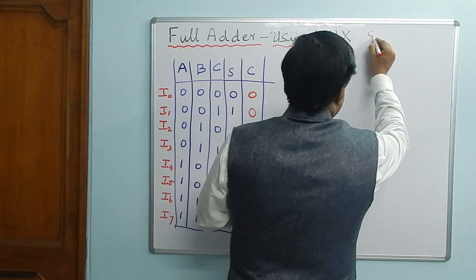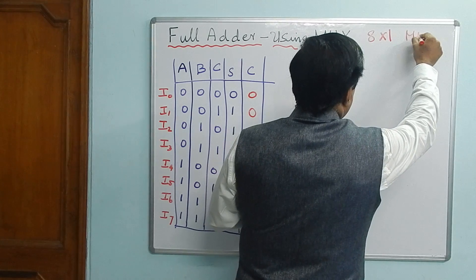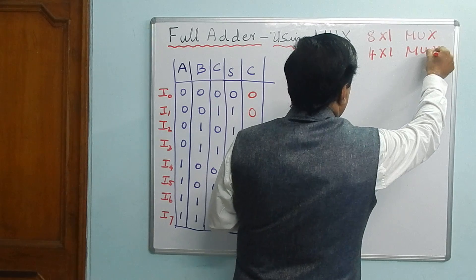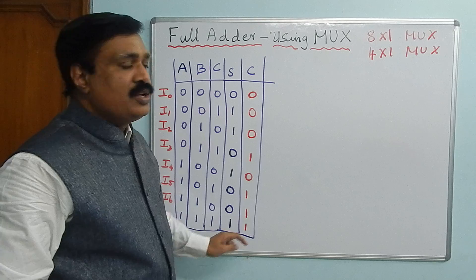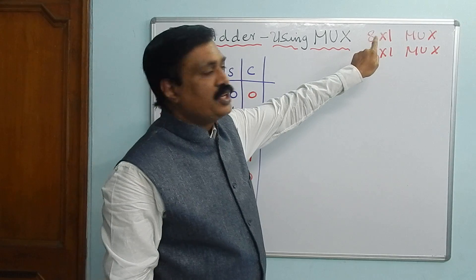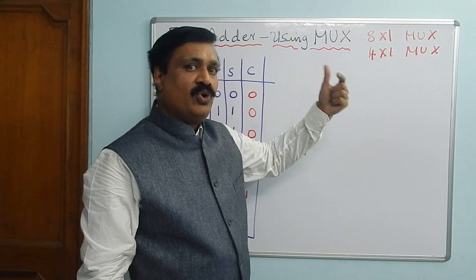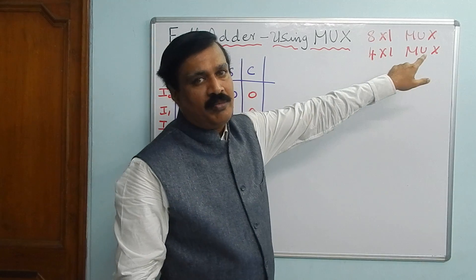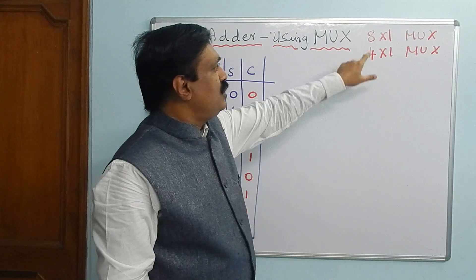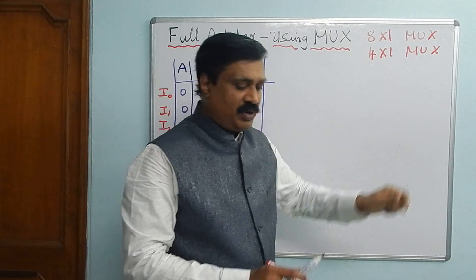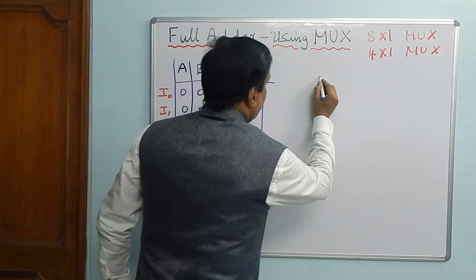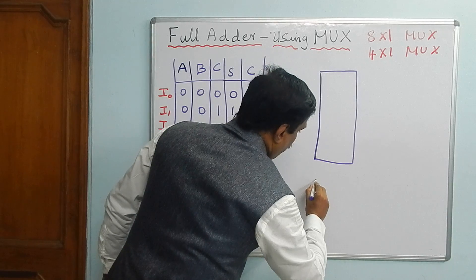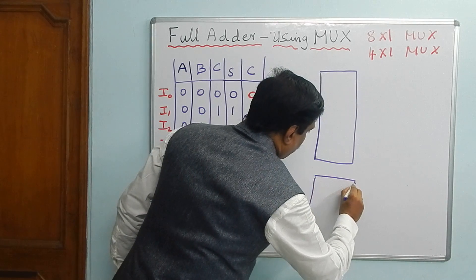As you already know, we can use an 8×1 multiplexer or a 4×1 multiplexer. Since we have eight inputs (I0 to I7), we can easily implement this using an 8×1 multiplexer. In tomorrow's class we will see how to implement this using a 4×1 multiplexer. Today we are going to use the 8×1 multiplexer, which is very simple.